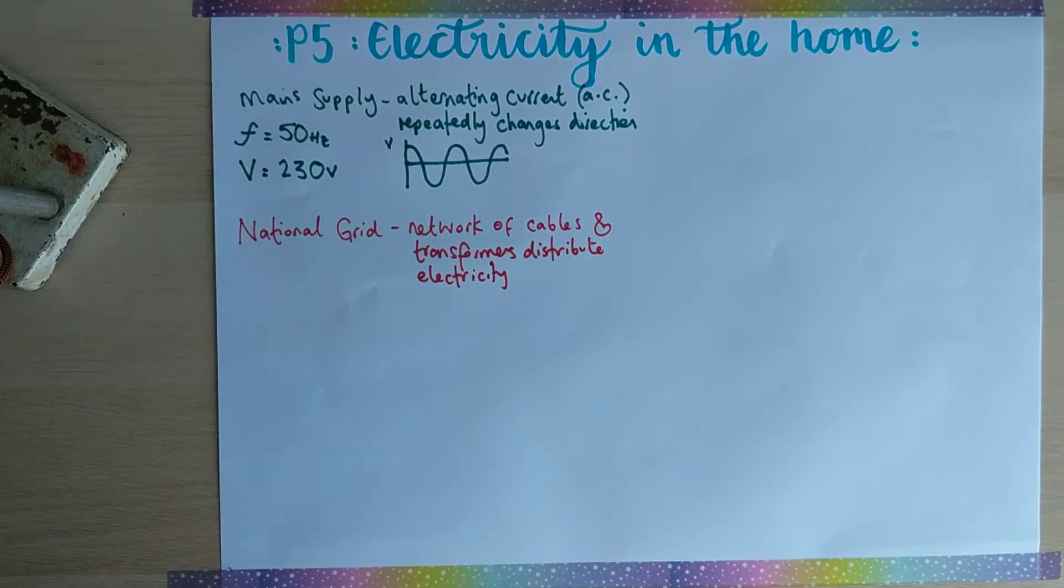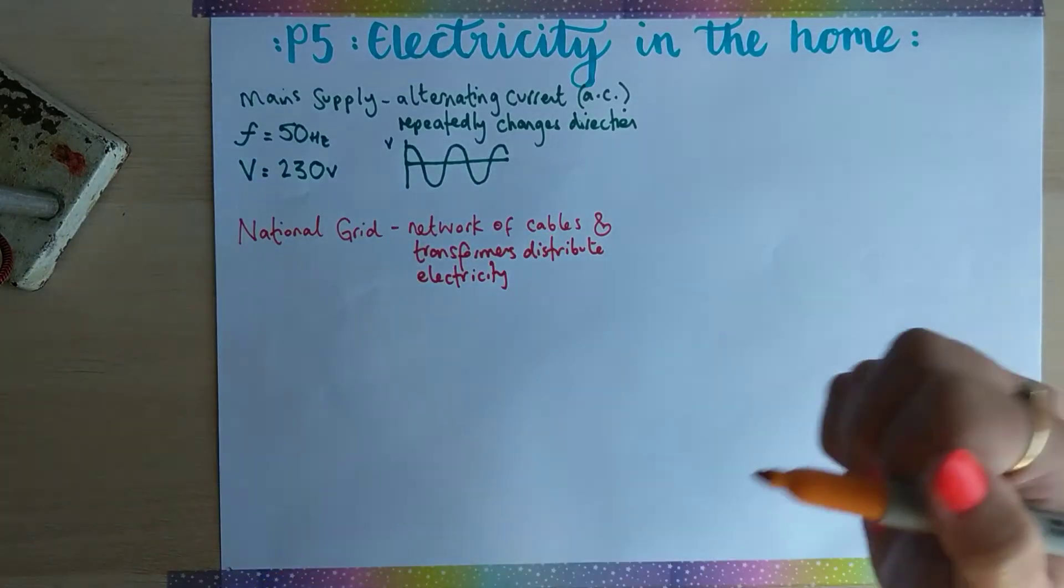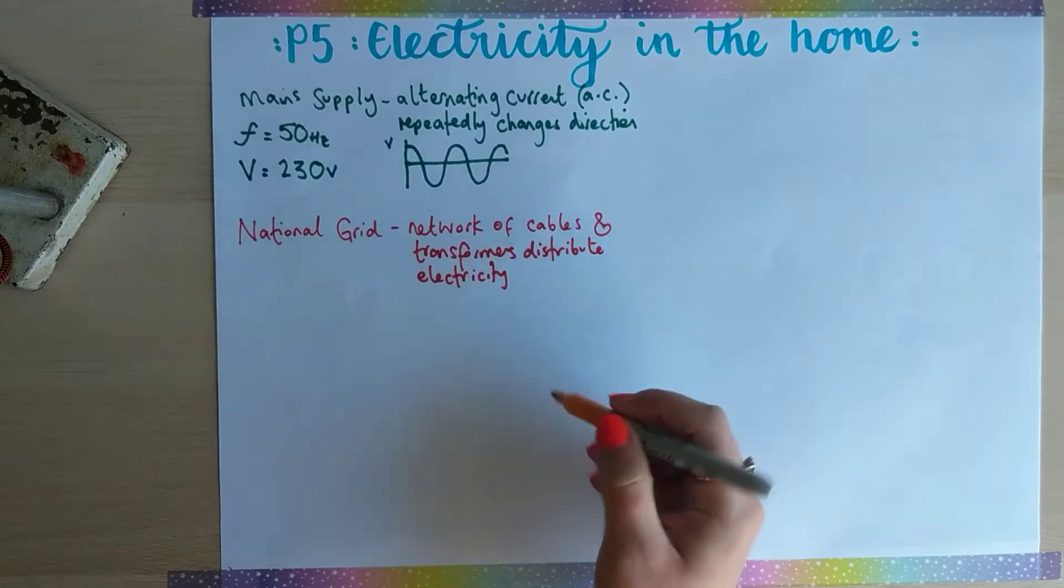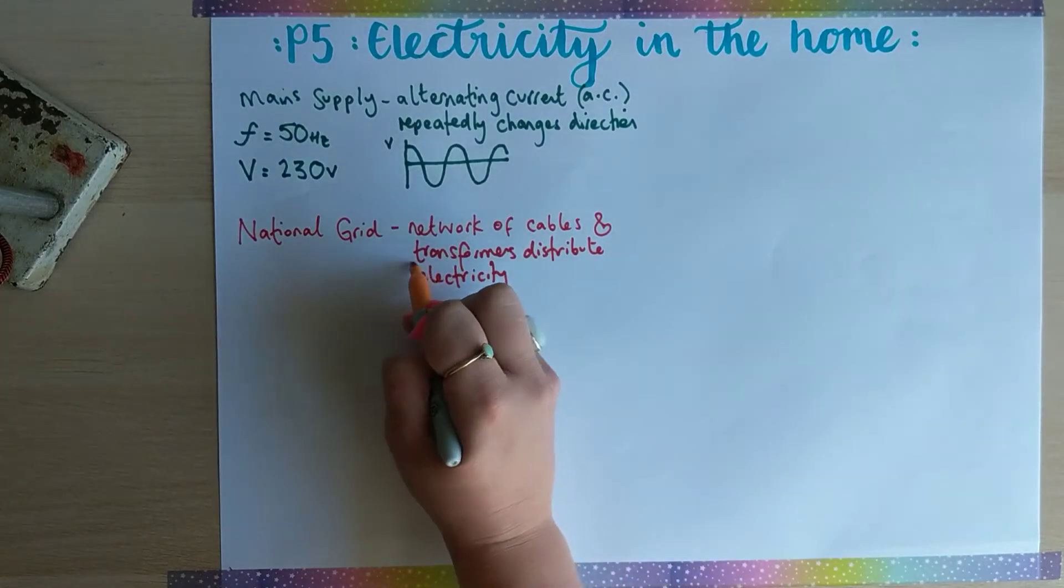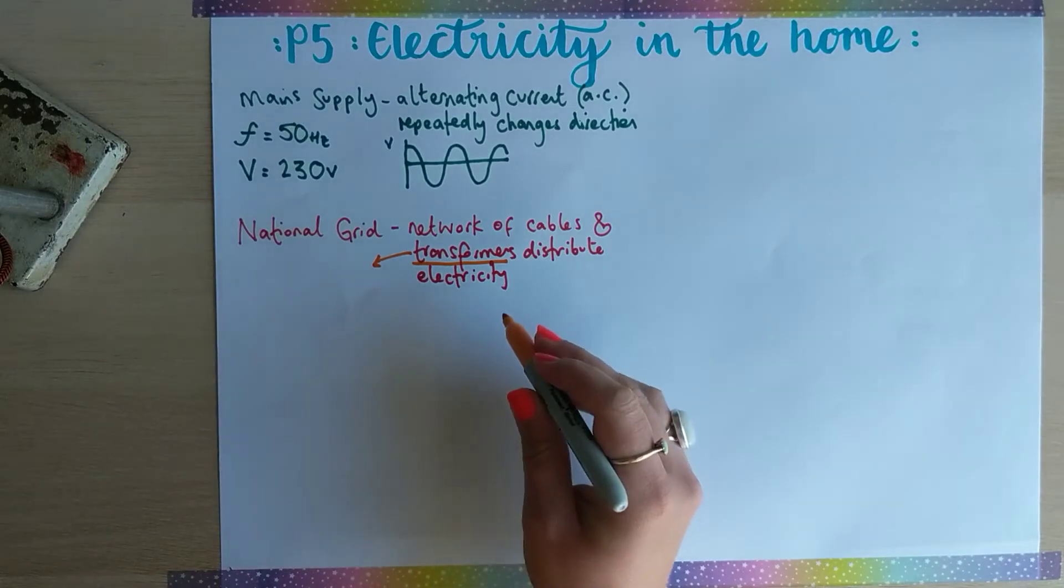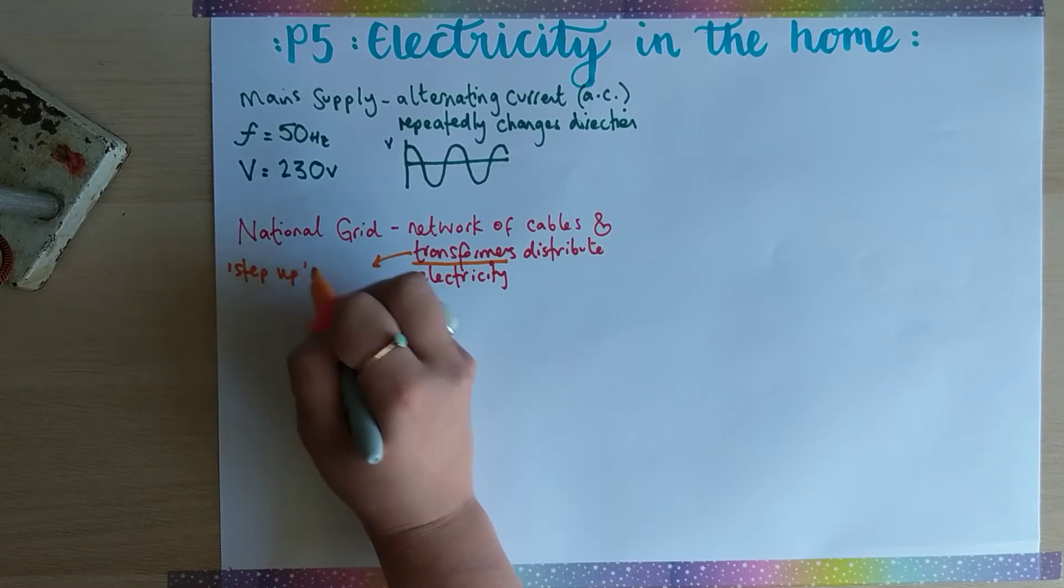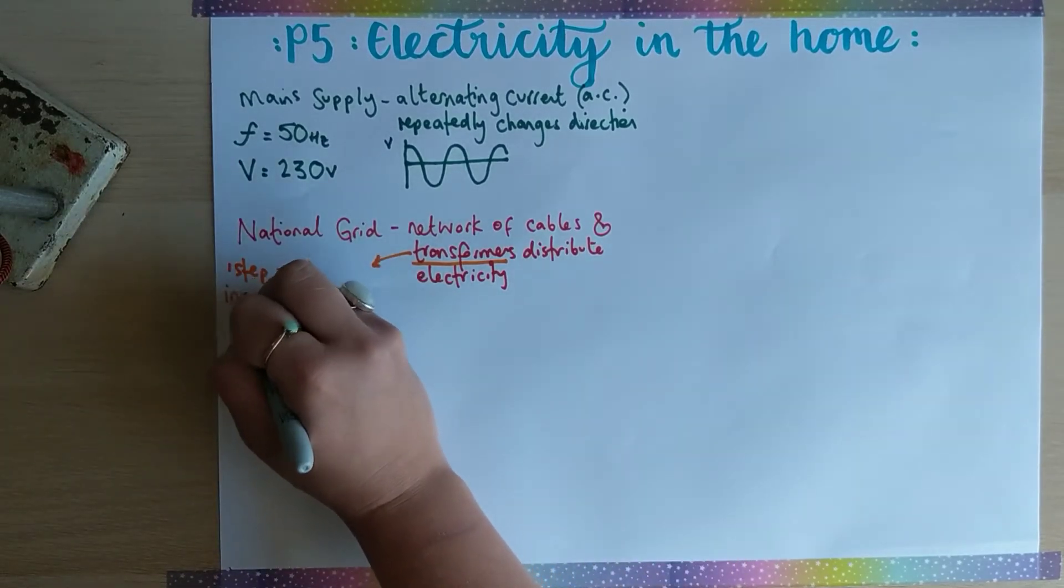Cables are literally the wires that carry the alternating current. What we mean by transformers is a device that either steps up the potential difference, which increases the potential difference.